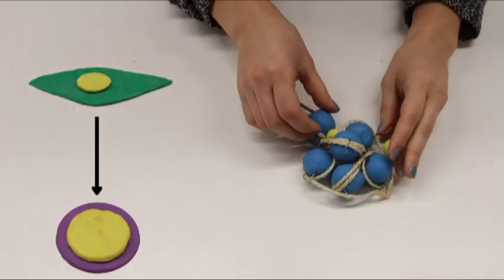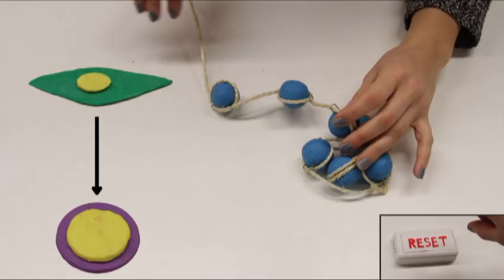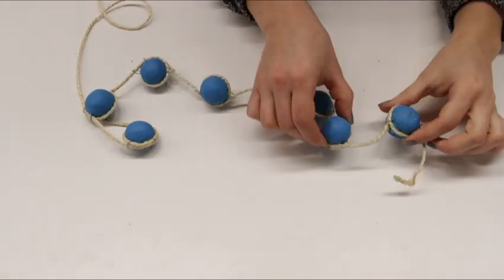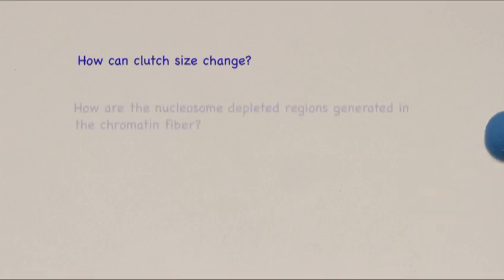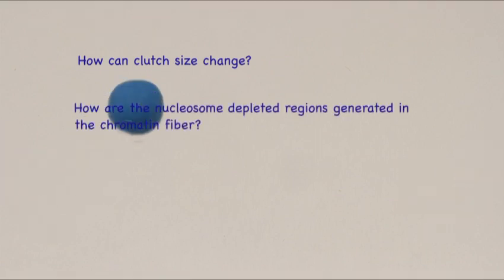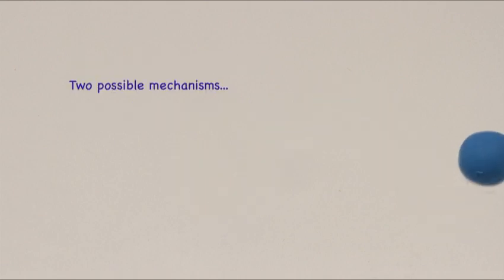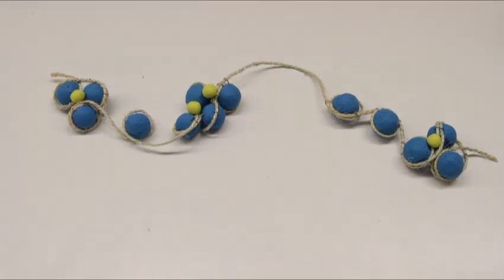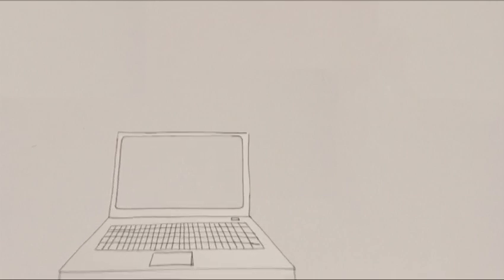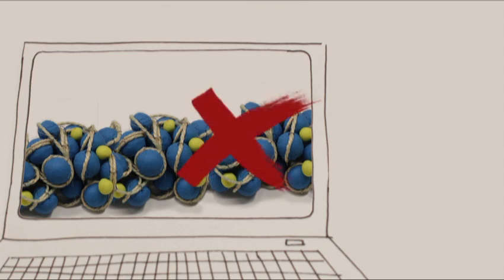Differentiated cells can be reprogrammed into a stem state through the process of induced pluripotency. How can the chromatin fiber go from containing mainly large clutches to containing mainly small clutches and vice versa during reprogramming? How are the nucleosome-depleted regions generated in the chromatin fiber? To address these questions, we hypothesized that two mechanisms — removal and sliding apart of nucleosomes — can play a role in generating smaller clutches in nucleosome-depleted regions. We then performed coarse-grained computer simulations to model these two mechanisms, and we compared the results to the experimental data.